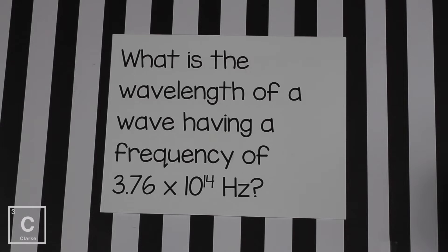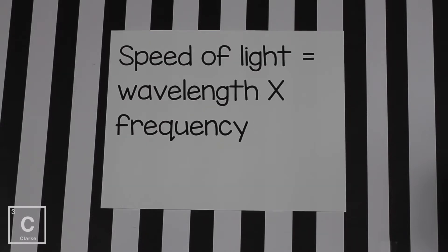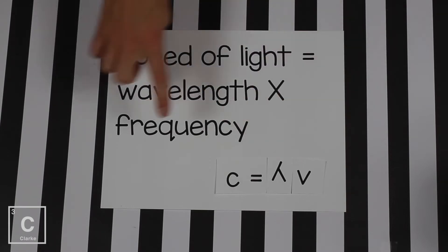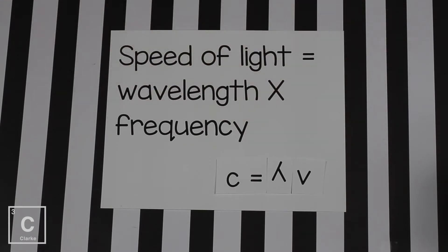In the question it mentions wavelength. We're going to use the formula speed of light equals wavelength times frequency. And this is what the formula looks like. So the speed of light is C. Wavelength is Greek letter lambda. Frequency is Greek letter nu. Lambda looks like an upside-down Y and nu just looks like a V.